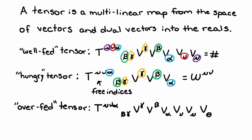We can also have overfed tensors with extra indices. Here, gamma, beta, alpha, nu, and mu are all contracted, plus we get an additional lower index theta, making the net tensor w lower theta.